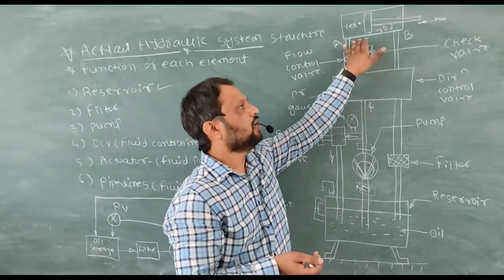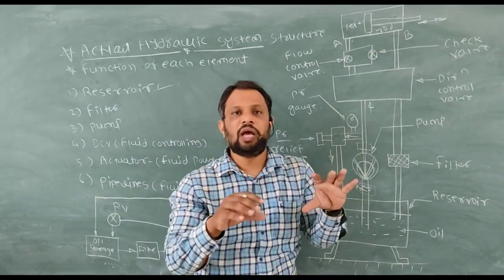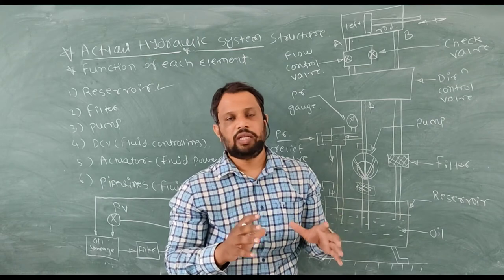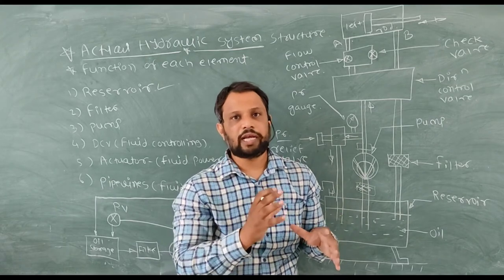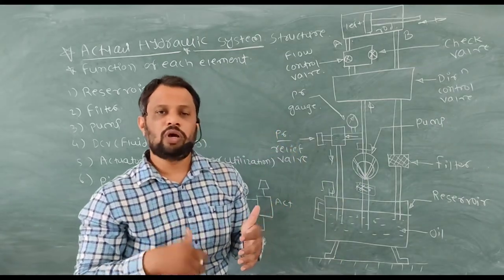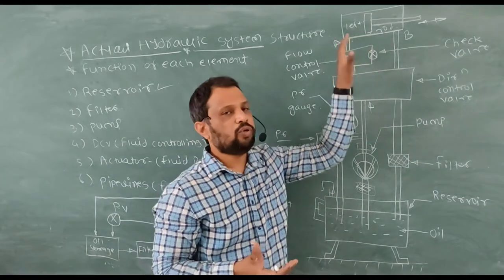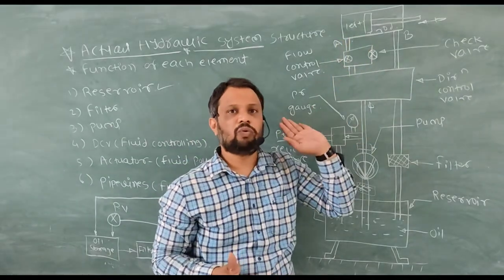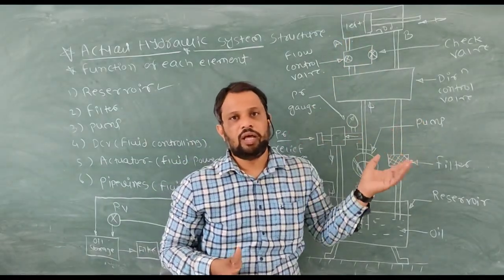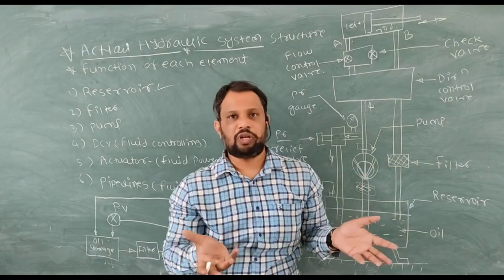And at the end, this is your actuator. It consists of a cylinder and piston assembly. It might be a linear actuator or a rotary actuator. In the diagram you can see it is working in the linear direction, so it is a linear actuator — but sometimes it is a rotary actuator also.